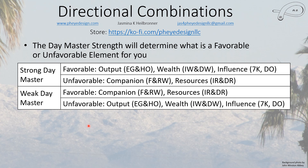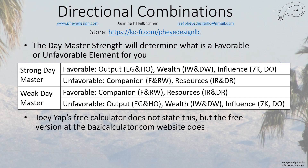For a strong day master — you can get this information from the BaZi calculator dot com site, which will tell you how strong your day master is — the favorable ones are output, wealth, and influence, and the unfavorable are companion and resources. The opposite is true for a weak day master: it likes companion and resource, and the unfavorable ones are output, wealth, and influence. The free version of the BaZi calculator website does state whether you're strong or weak.